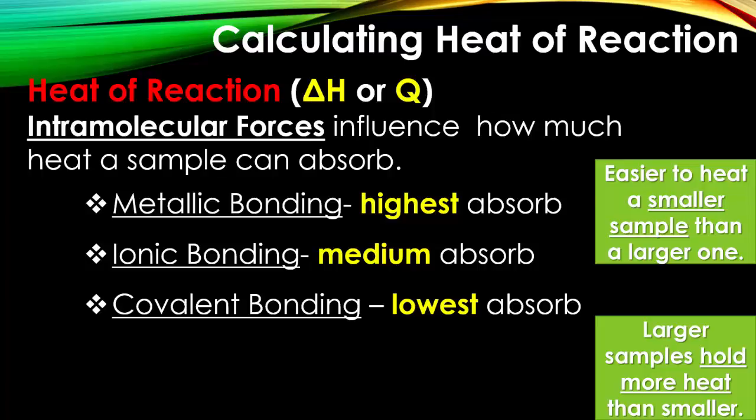Metallic bonding, so all metals, will hold the highest amount of heat, while things that are ionic bonding hold a medium amount of heat. Therefore, things that are covalent can hold the lowest amount of heat. This is why we use metal to cook with, but plastic, if we were to use to cook with, would immediately burn or vaporize into a gas.